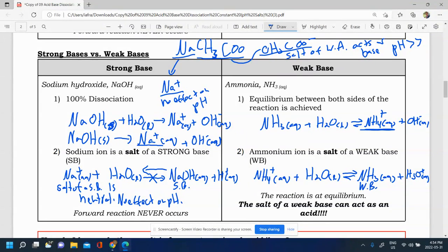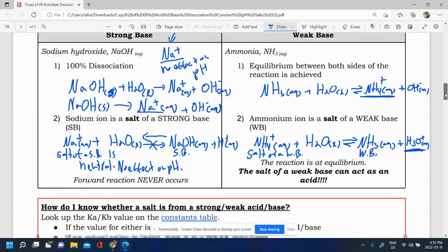This is a weak base based on our Ka table. So this is the salt of a weak base. And the salt of weak base actually acts as an acid because it makes H3O plus there. So if you see the salt of weak base, that can have an effect on pH, it will act as an acid.